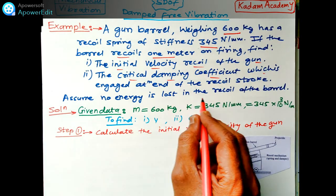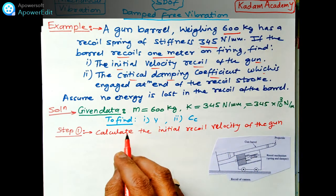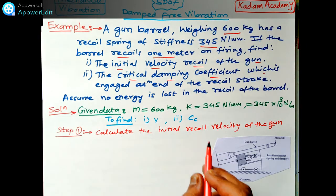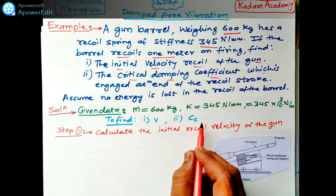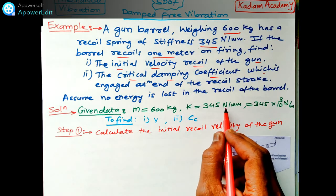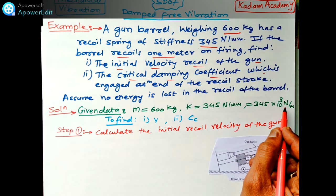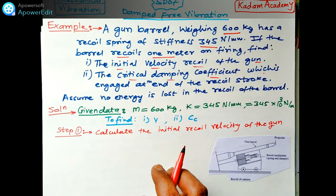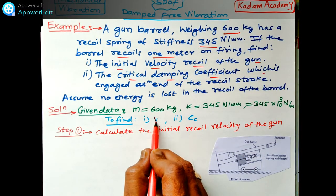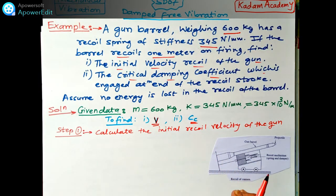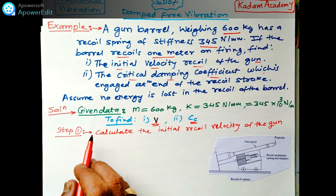The given data is: mass m = 600 kg, spring stiffness k = 345 newton per millimeter, converted to newton per meter as 345 × 10³ N/m. We have to find the initial velocity and the critical damping coefficient. We will do this stepwise.